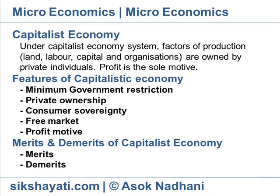Private ownership. Factors of production — for example, machines, mines, factories, farmhouses, etc. — are owned by private entrepreneurs. They are free to use these to produce commodities the way they like to.